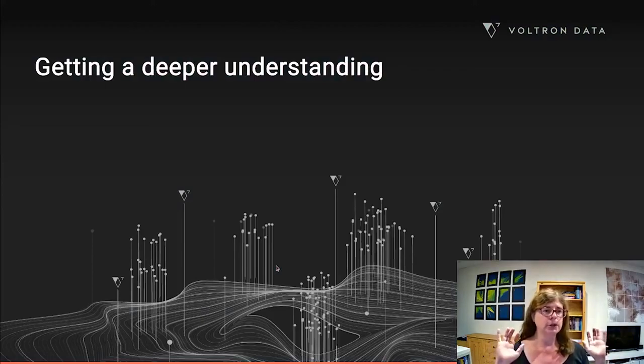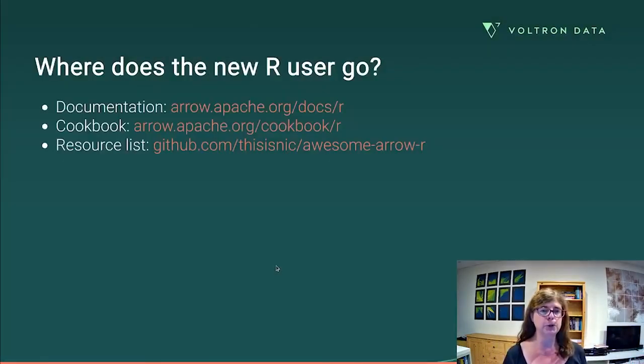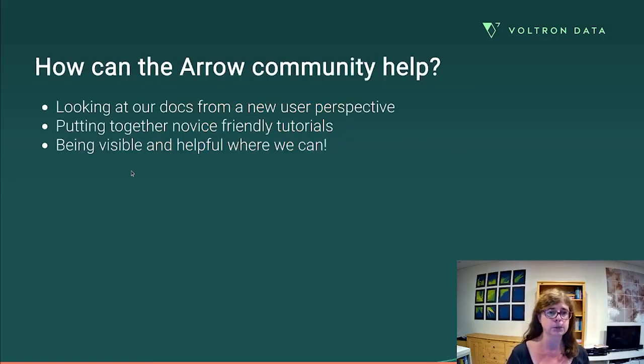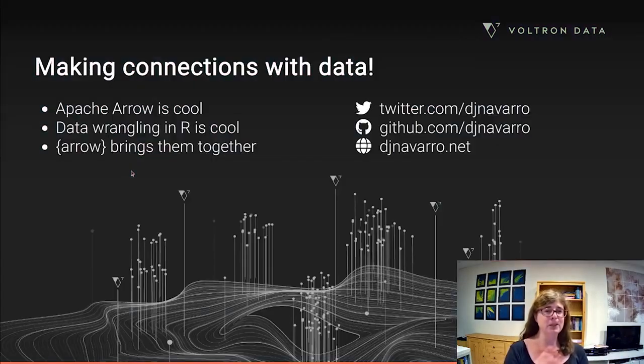And that's basically it. That's all I wanted to say in this talk. I've got some links here to, if you want to go follow up on this, we've got links to the documentation. There's a cookbook. There's even a list on GitHub of a bunch of informal resources that you can check out to learn more about how to use the Arrow package in R. The Arrow community, we're here to help. We're going to be working on improving our documentation. We're going to put together more novice friendly tutorials and just be visible and helpful where we can. So I'm going to leave it there and say, making connections with our data is great. I really like Apache Arrow. I like wrangling data with R and that's one of the reasons I like the Arrow package is because I get to pull all these things together.